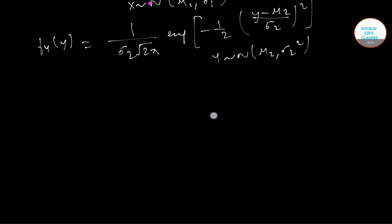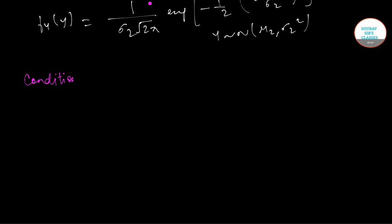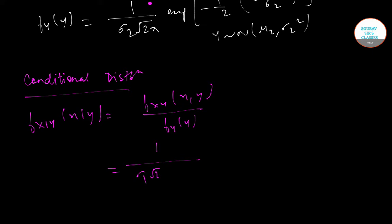The conditional distribution is given as f(X|Y) = f(X,Y)/f(Y), which equals 1/(σ_1 √(2π) √(1-ρ²)) × exp[-1/(2(1-ρ²)σ_1²) × (x - μ_1 - ρ(σ_1/σ_2)(y-μ_2))²].